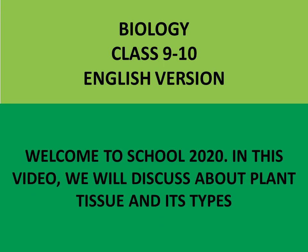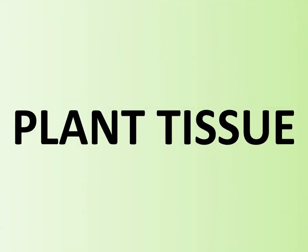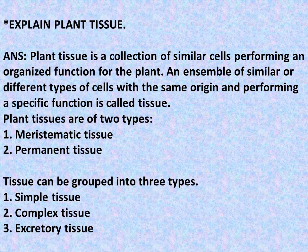Welcome to School 2020. In this video we will discuss plant tissue and its types. Plant tissue is a collection of similar cells performing an organized function for the plant — an ensemble of similar or different types of cells with the same origin and performing a specific function is called tissue.